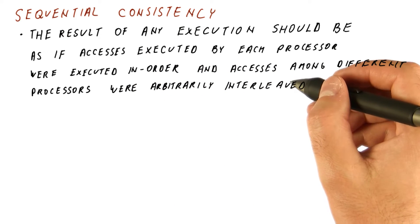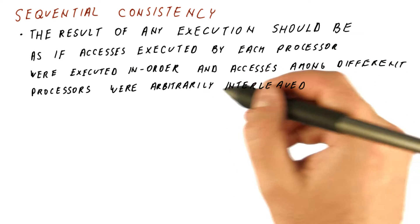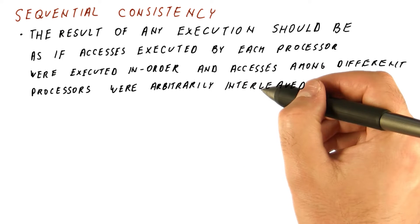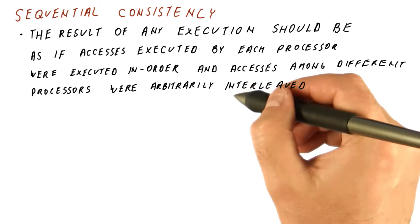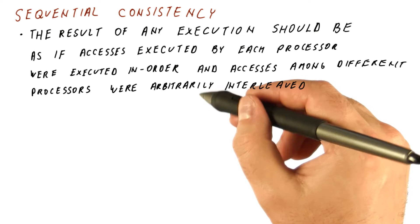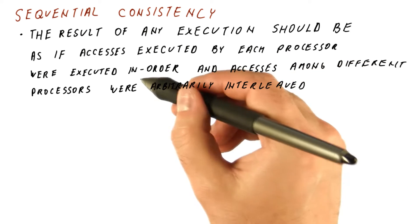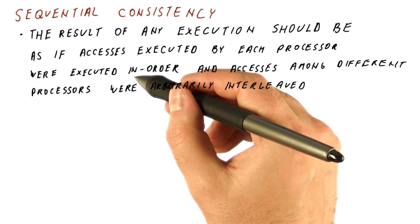We are allowed to let processors take turns in terms of accessing or let one access several times before another one does and so on. We can do anything we want to interleave the accesses from different processors. But what comes from each of the processors needs to be exactly in program order.